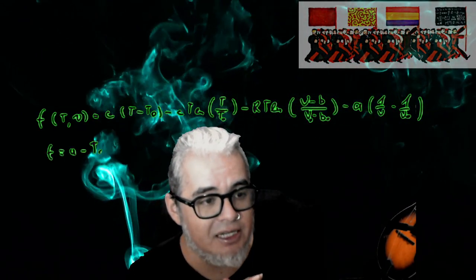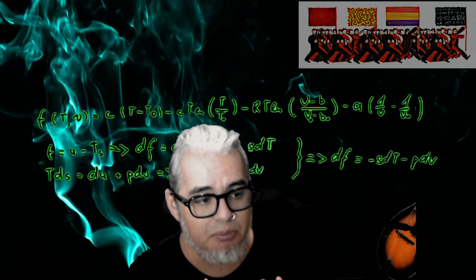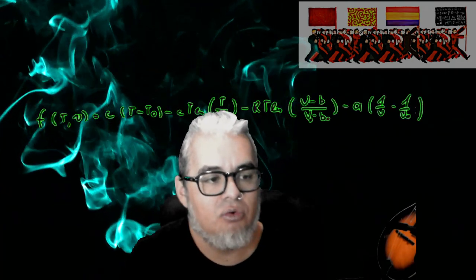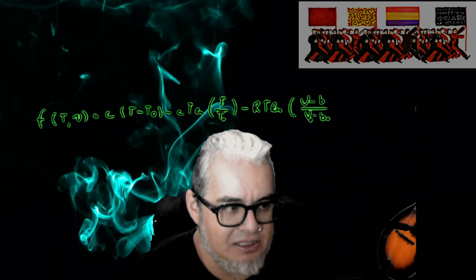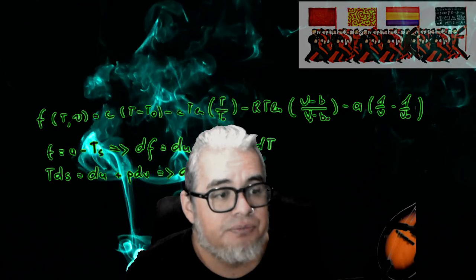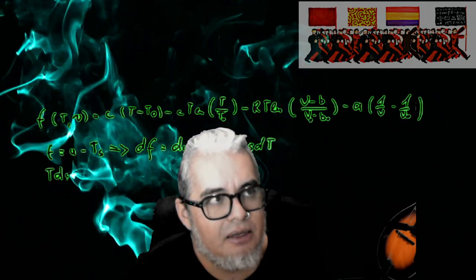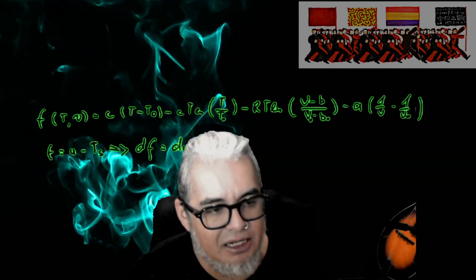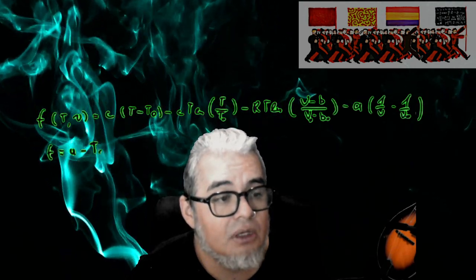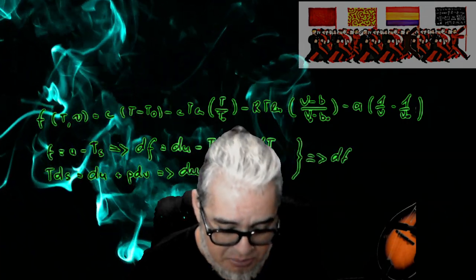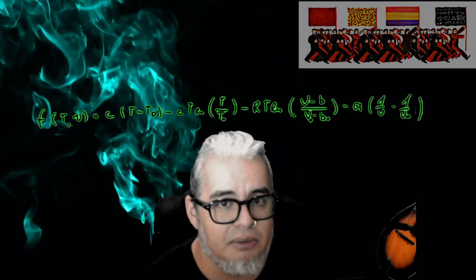Terminando esta parte, acabaríamos con lo que quería dar sobre estimación puntual — es decir, a partir de ciertas propiedades del estimador o de alguna estadística conocida, podemos acercarnos hacia el parámetro que nos interesa. Después haremos no una estimación puntual, sino una estimación de un intervalo en el cual podríamos encontrar con cierta probabilidad el parámetro, lo que tiene que ver con intervalos de confianza. Pero vamos a continuar con lo que estábamos haciendo y vámonos al pizarrón.